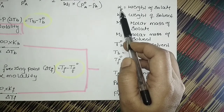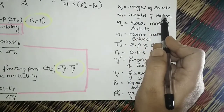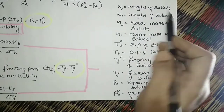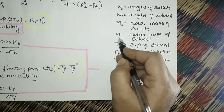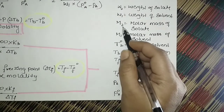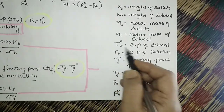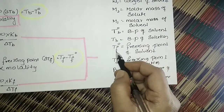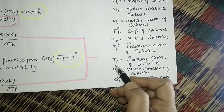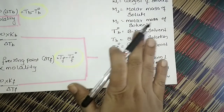When W2 is written, the subscript 2 refers to solute, and 1 refers to solvent. So W2 means weight or mass of the solute, W1 means weight of the solvent, M2 (capital M) means molar mass of the solute, and M1 means molar mass of the solvent. T0B means the boiling point of the pure solvent, TB means the boiling point of the solution. Similarly, TF0 means freezing point of the pure solvent, PA means vapor pressure of the solution, and P0A means vapor pressure of the pure solvent.